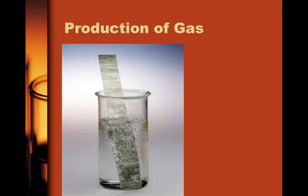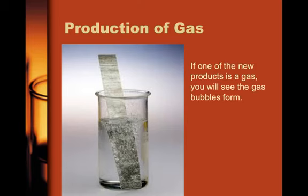The second one is the production of a gas. If one of the products being formed is a substance that at room temperature exists as a gas, then it's going to form not as a solid like a precipitate, but as a gas. It's simply going to bubble out of the solution you're looking at — very similar to the precipitate, but forming as a different state of matter.